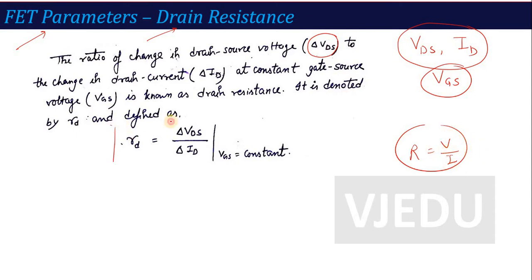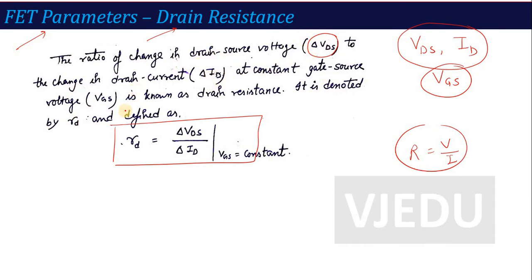The drain resistance is defined as: Rd is equal to drain voltage divided by drain current at constant gate-to-source voltage. So the definition is: the ratio of change in drain-to-source voltage to the change in drain current at constant gate-to-source voltage is called drain resistance. This is the first parameter.